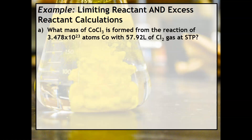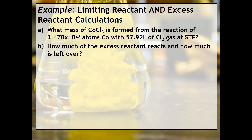Let's move on to some excess reactant calculations. Here's an example: what mass of cobalt-3 chloride is formed for the reaction of 3.478 × 10²³ atoms of cobalt with 57.92 liters of Cl₂ gas at STP? Part B is the new part — it asks how much of the excess reactant reacts and how much is left over. We first have to decide what mass is actually formed, which requires a limiting reactant calculation. I don't give you the balanced chemical equation, so you need that too.